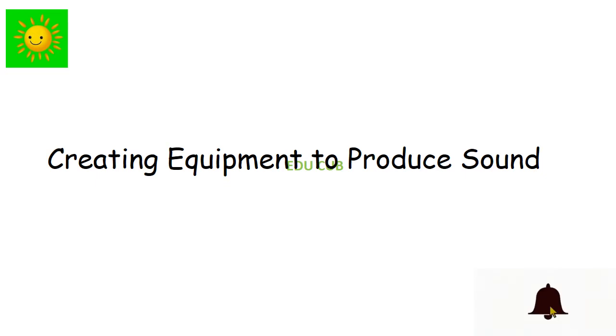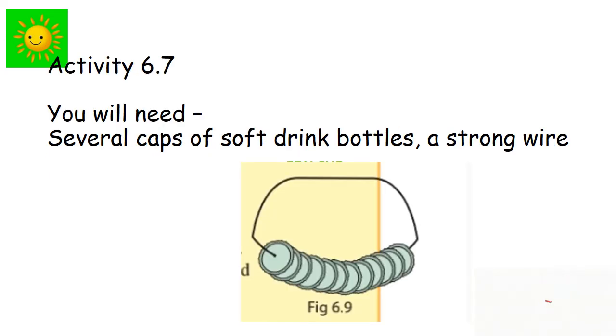Our next subtopic is creating equipment to produce sound. There are many activities regarding these creating equipment. First one is this: we need several caps of soft drink bottles and strong wire. We have to make this instrument by crushing the bottle caps and make them as a tablet. Make a hole in the middle of the caps and send the wire through the holes. Now shake it. You can hear the sound.